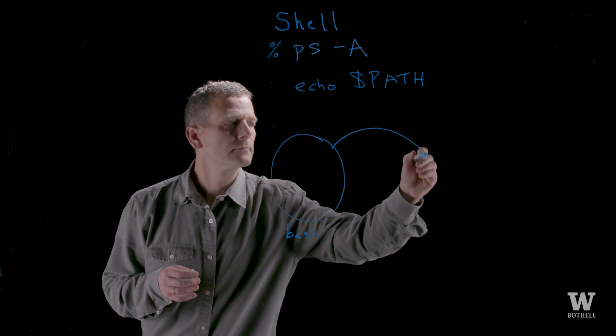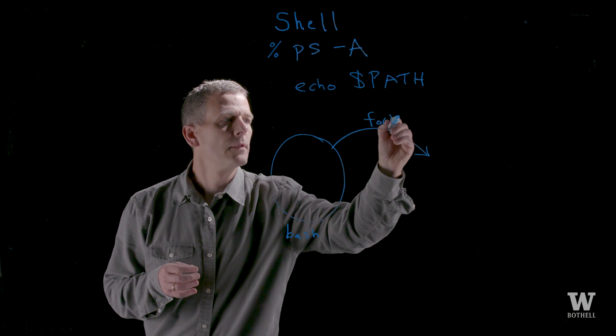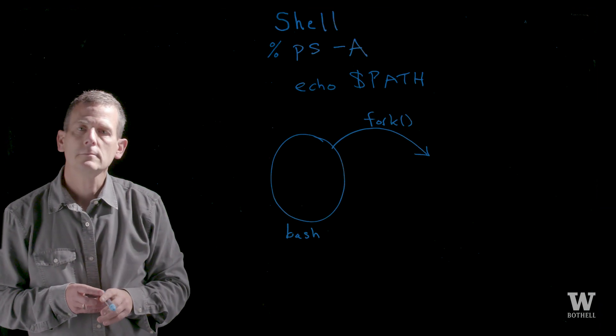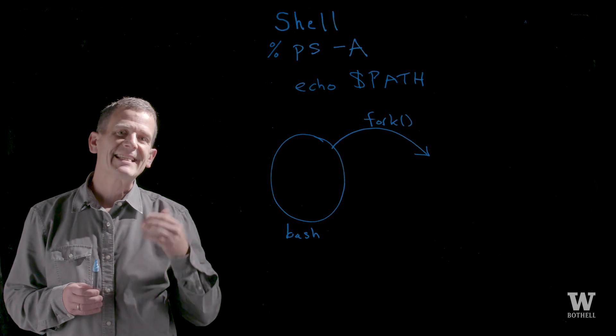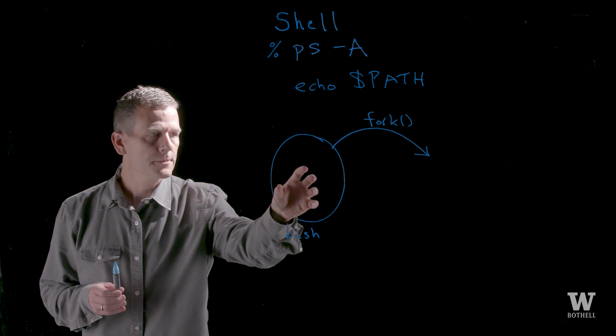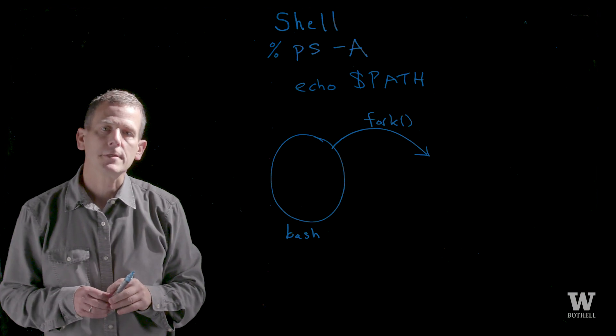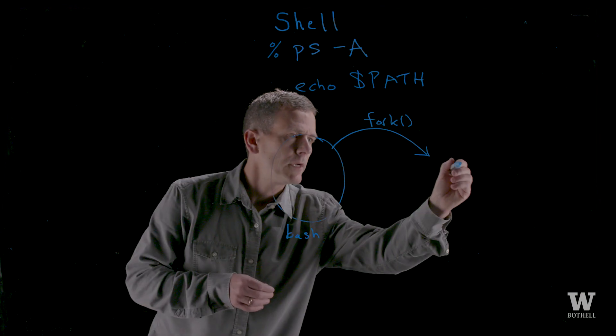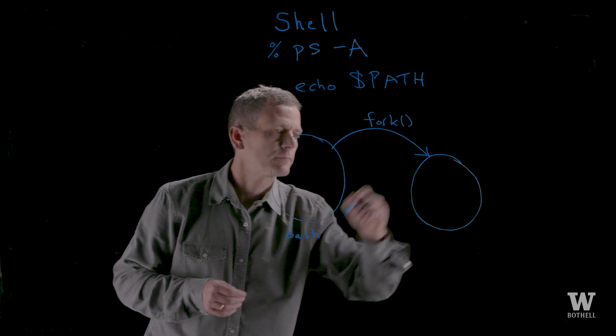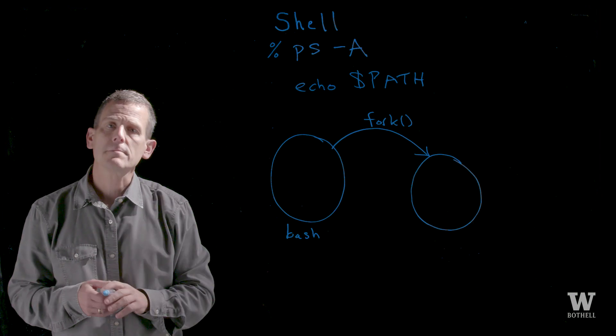You may recall what the fork does is makes an exact copy of the process and executes it as an independent process. The child process needs to run the ps-a command.